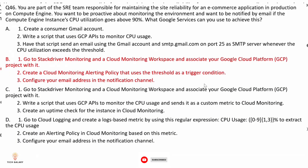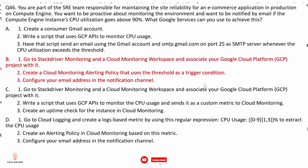Option D: go to Cloud Logging and create a logs-based metric using a regular expression to extract CPU usage, create an alerting policy in Cloud Monitoring based on this metric, and configure your email address in the notification channel. This is not correct because to monitor CPU we should use Stackdriver Monitoring, not Cloud Logging. This option does not make use of Stackdriver Monitoring or Cloud Monitoring workspace for the alerting mechanism.